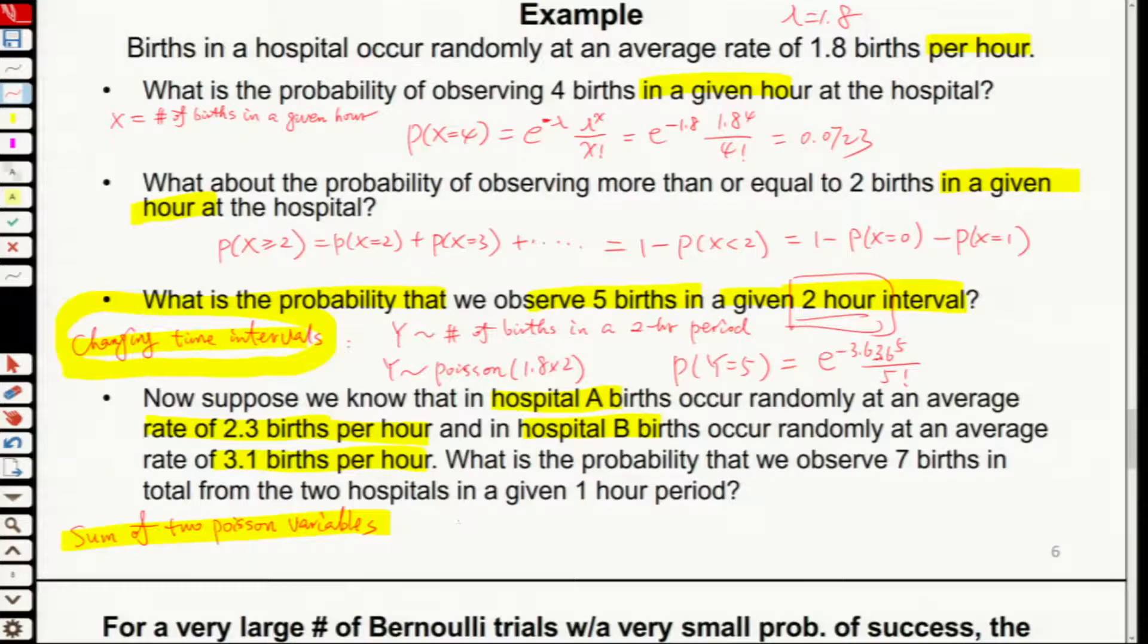In this case, if you have X that is Poisson lambda 1, and Y is Poisson lambda 2, if you plus X and Y together, this is Poisson lambda 1 plus lambda 2.